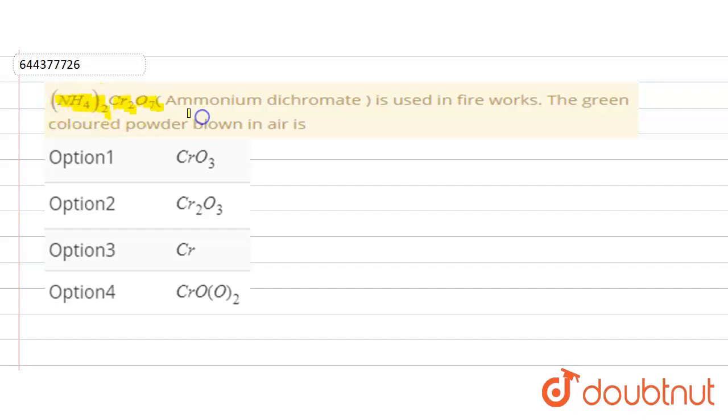...which is ammonium dichromate, is used in fireworks. The green colored powder blown in the air is what? So we have given these options.